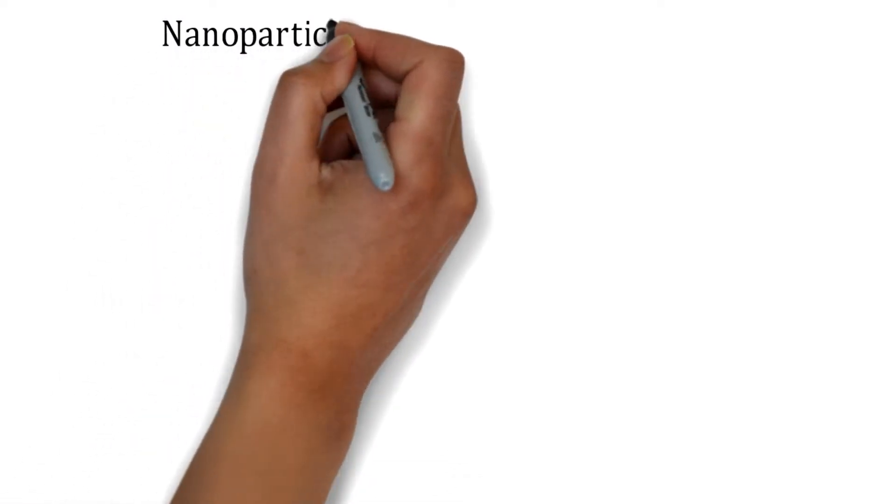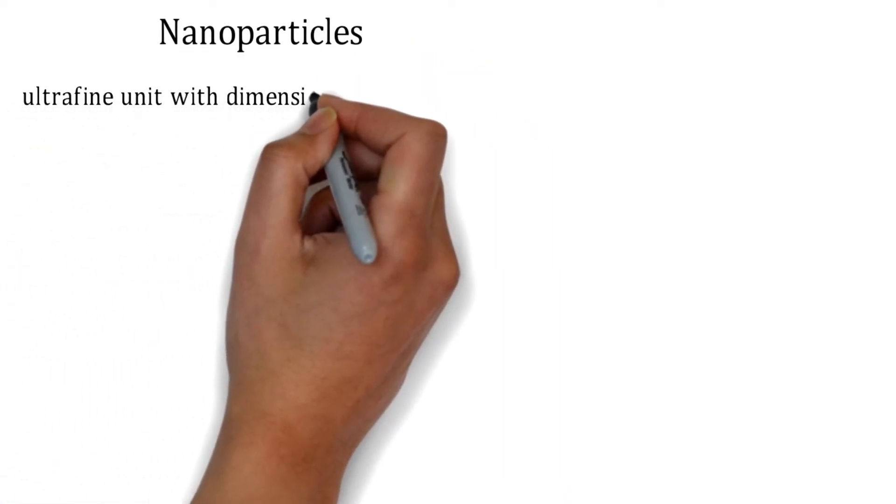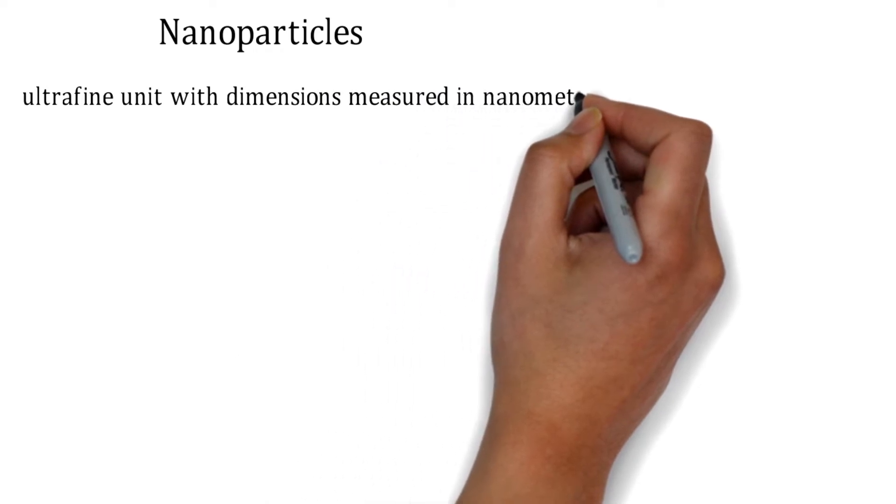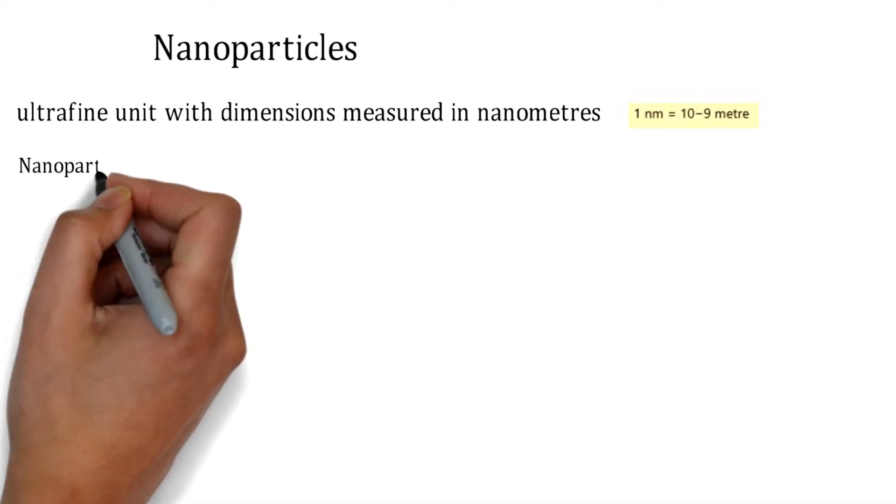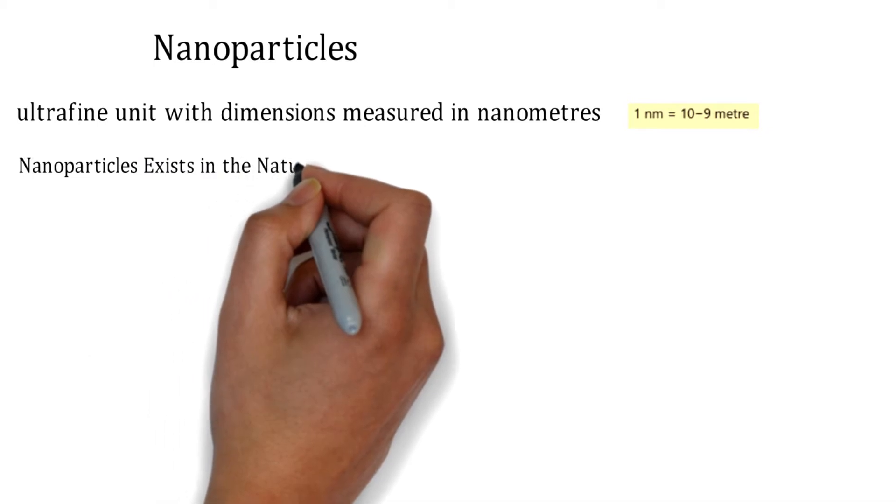Let's begin with our topic: Nanoparticles. Nanoparticles are the ultrafine unit with dimensions measured in nanometers or nanoscale. That is, 1 nanometer is equal to 10 raised to minus 9 meters, which is very, very small.